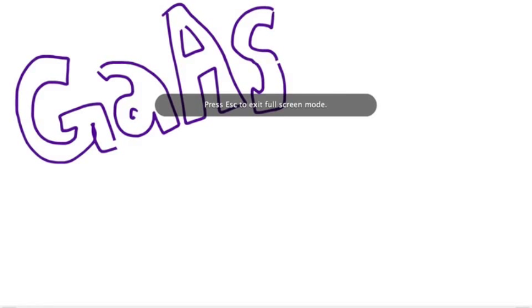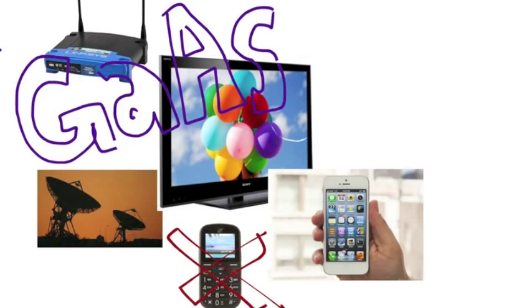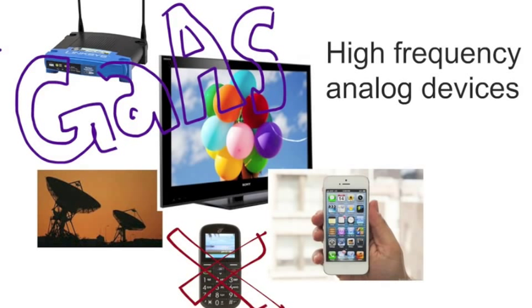Now, let's motivate potential applications for gallium arsenide HEMTs. Some of these include satellite communication, wireless communication, TV signals, and potentially your cell phone. Well, maybe not that cell phone. More like an iPhone. So, all these require high-frequency analog devices. And gallium arsenide can do high-frequency because it has a very high electron mobility.